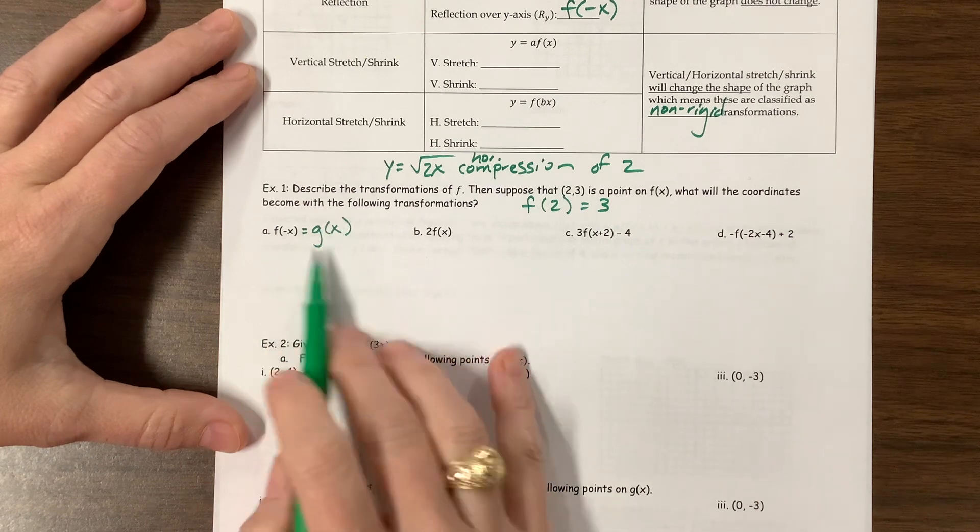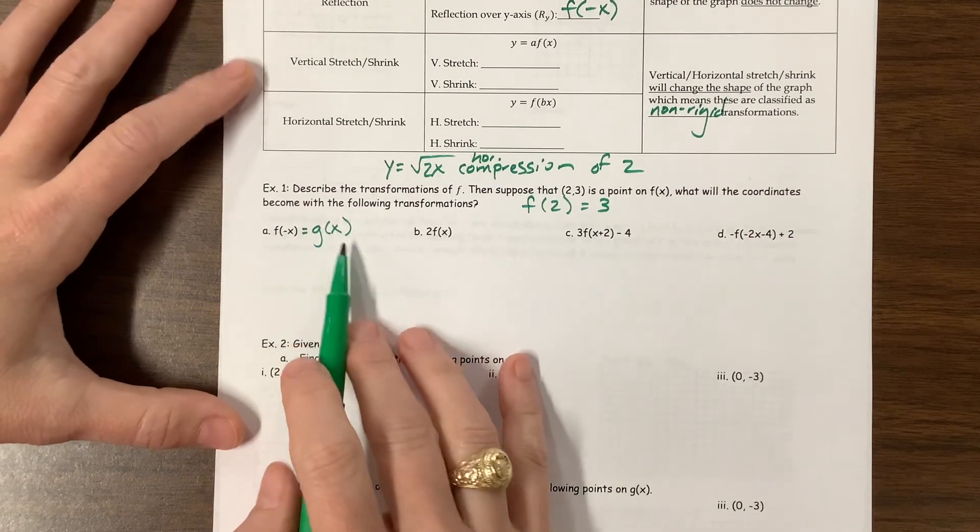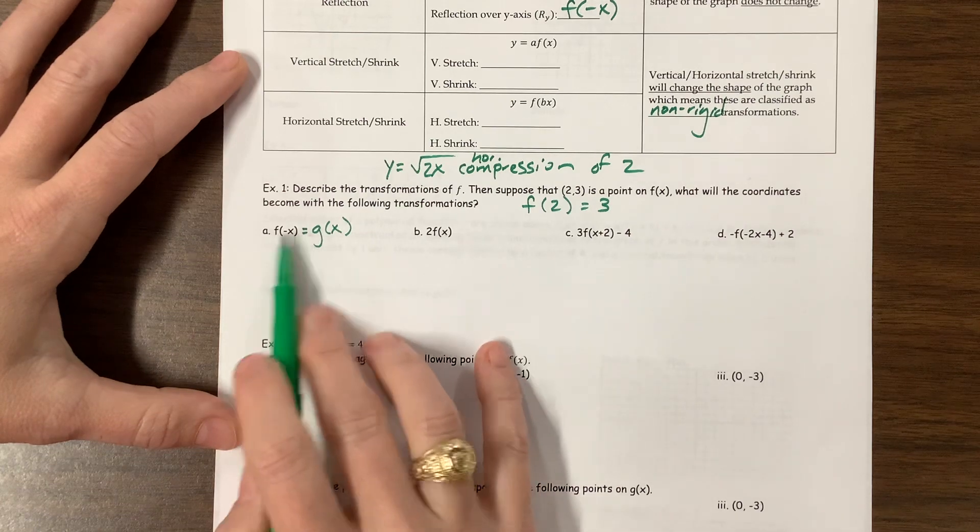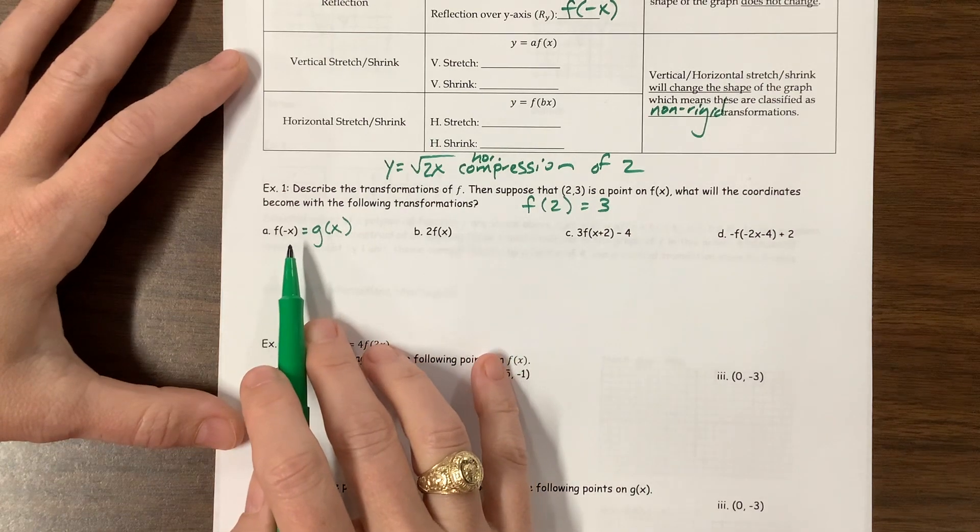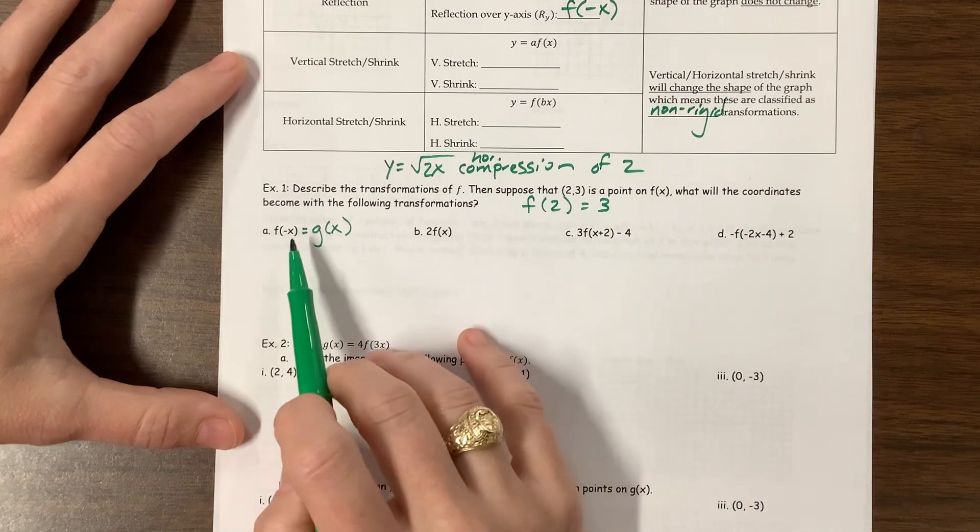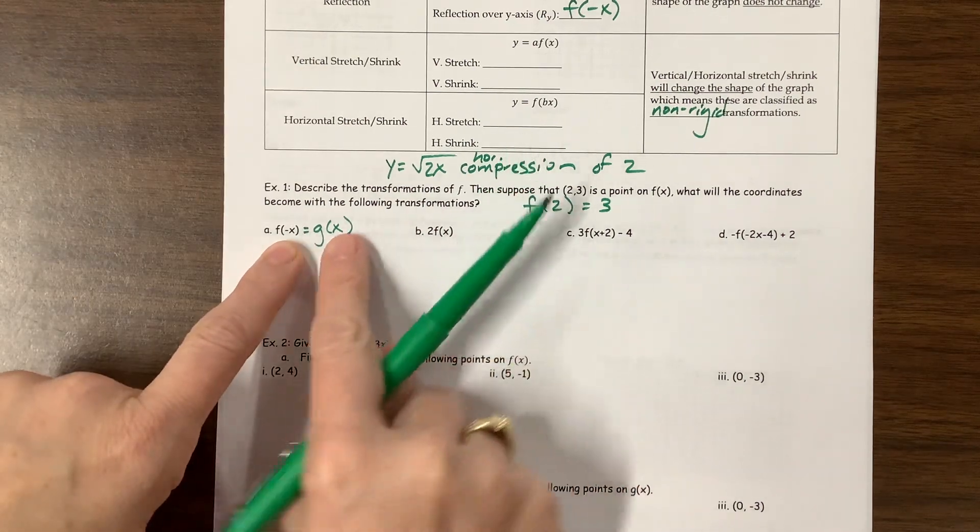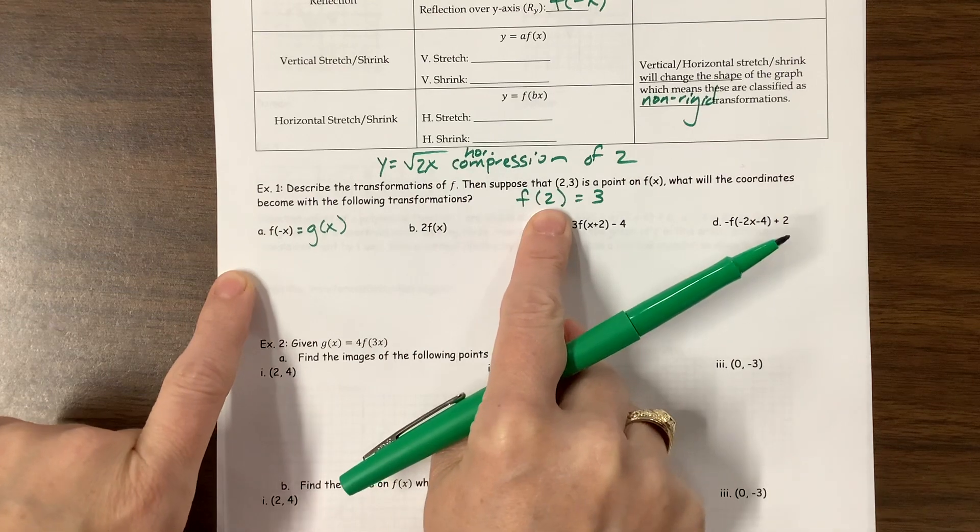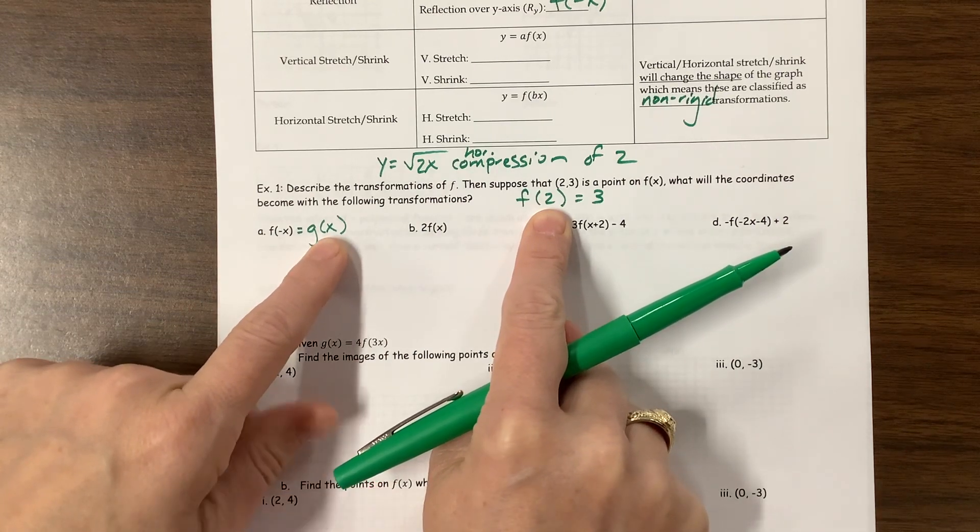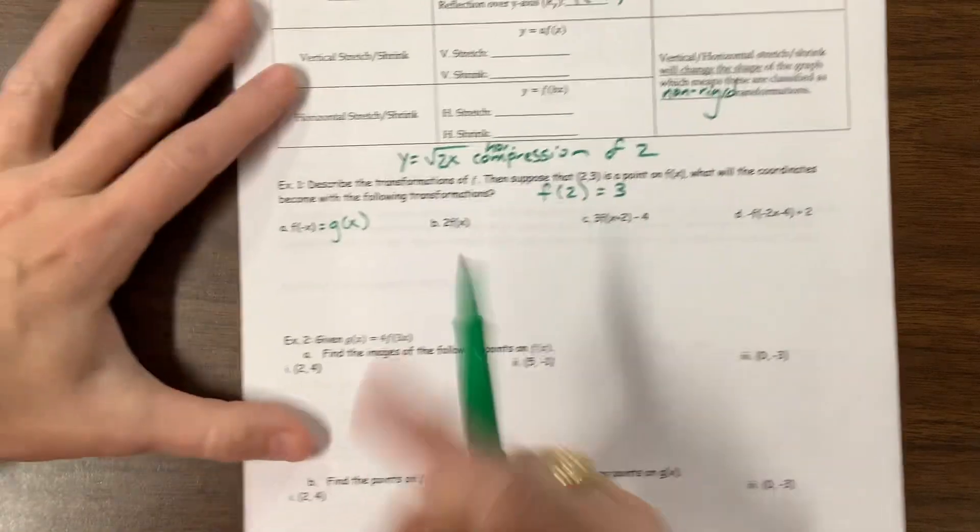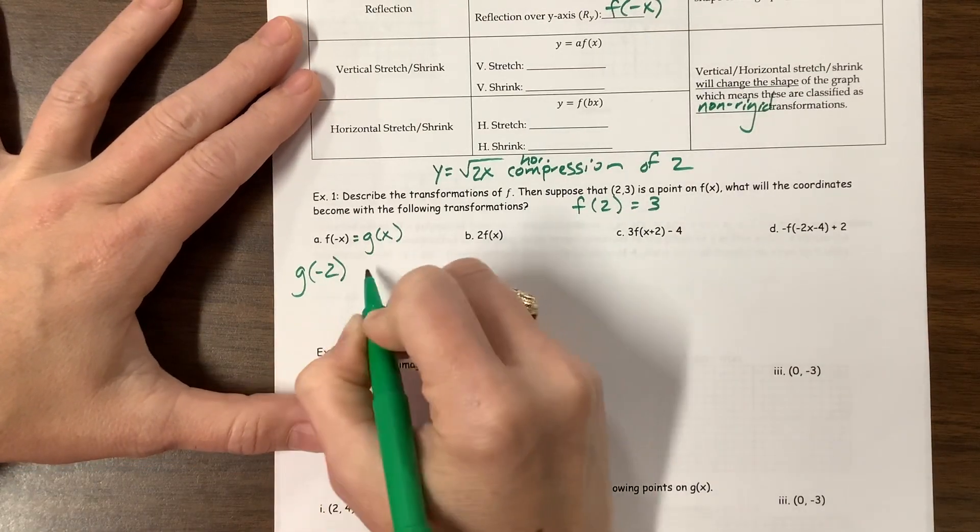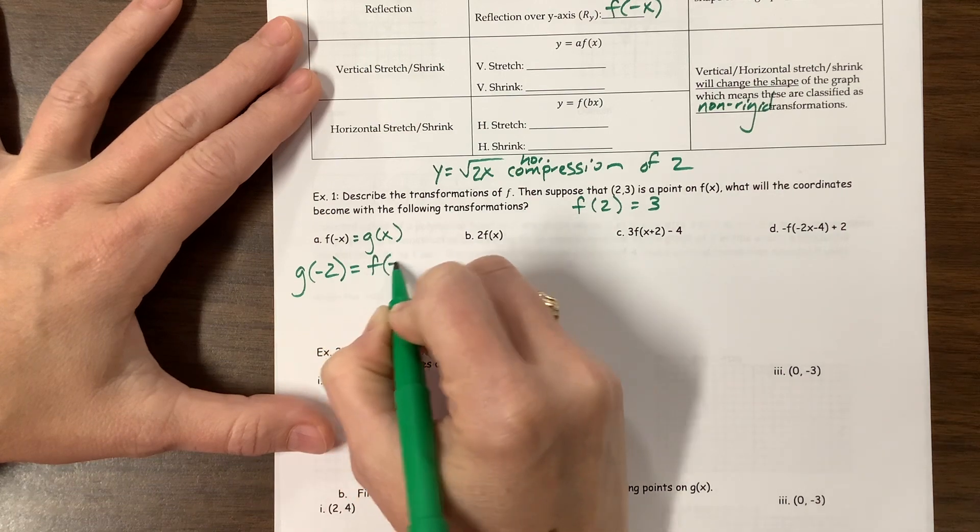So the shape, this one, we just basically pick up whatever shape it is and move it or reflect it. But nothing, but the actual original shape doesn't change. On this one, we have stretched it or pulled it in some capacity and so they're non-rigid. Okay, let's go a little more into detail here. So it's described the following transformations of f. Then suppose that 2, 3 is a point on f of x. What will the coordinates be with the following transformation?